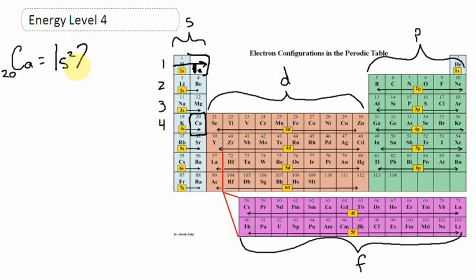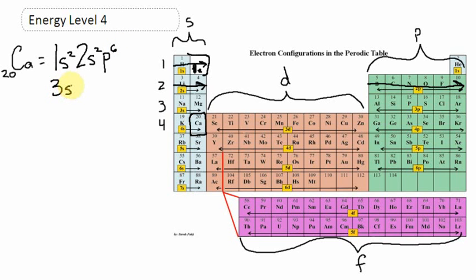1s2 takes care of the first two electrons. In the second energy level, the next two electrons are going to be placed in the s orbital as well — that's 2s2. And we're also going to fill up the p's, the 2p6. I've placed six electrons in the p orbital. So far: two electrons in 1s, two in 2s, and six in 2p — that's 10 electrons placed, 10 more to go. On the third energy level, the s orbital is going to hold 2.